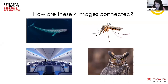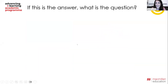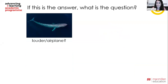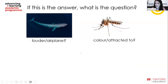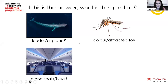Each of these four images actually answers a question. For example, the blue whale is the answer to a question — what do you think the question might be? Is a blue whale louder than an aeroplane? Fantastic. So if the mosquito is the answer, what do you think the question is? Which color is it most attracted to? Very good.